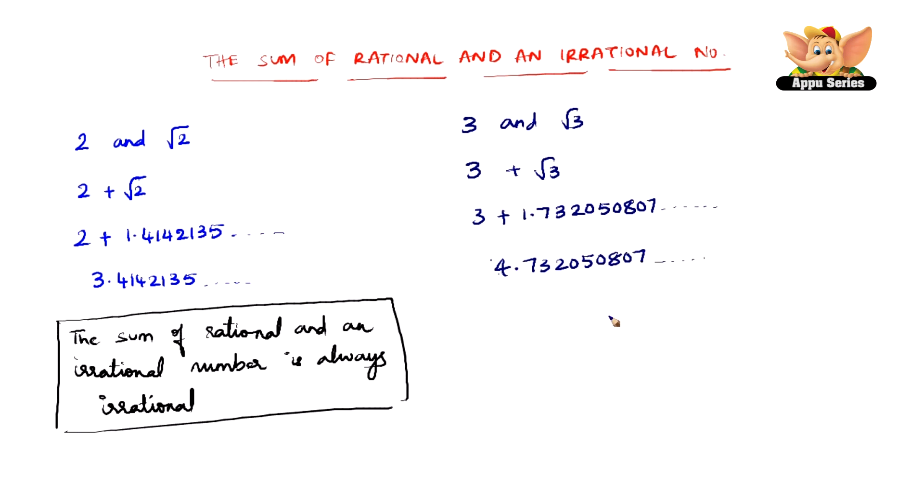So this is still an irrational number. Again, it proves that the sum of a rational and an irrational number is an irrational number.